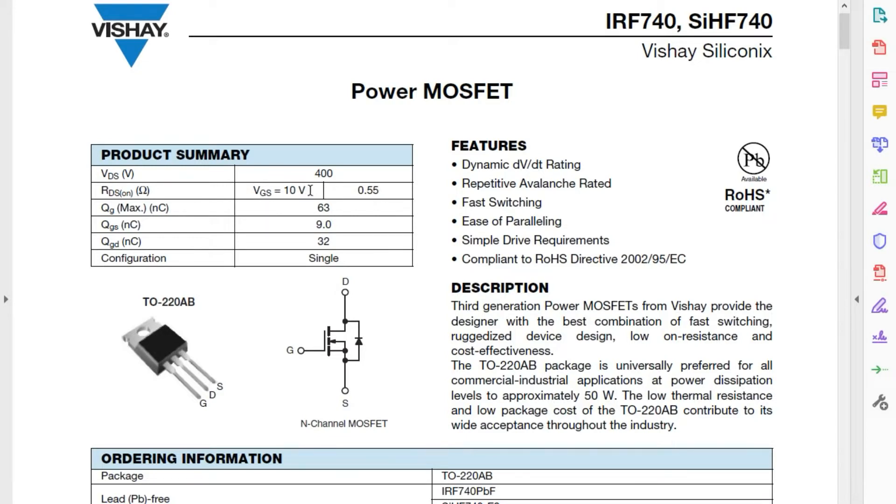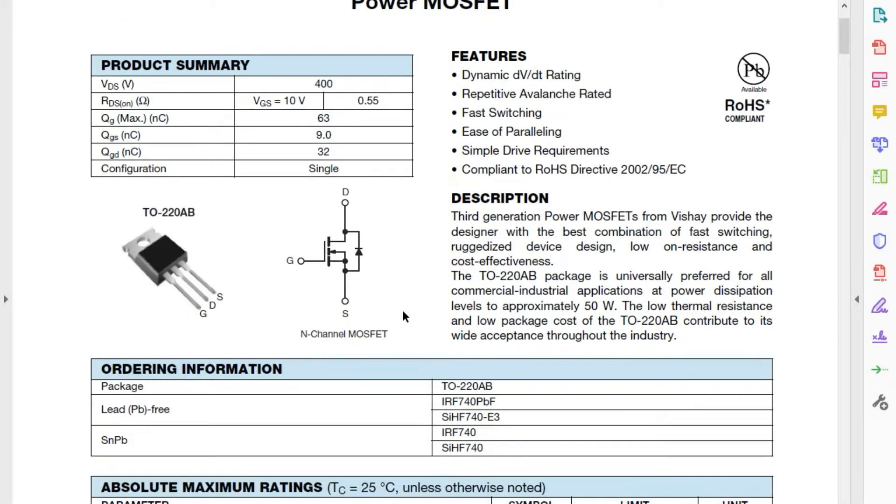VGS equals 10 volts. That's a lot. That's a lot of voltage to turn the thing on but then it will handle up to 400 volts from the drain to source. That's a lot of voltage. This really is a high power N-channel MOSFET.